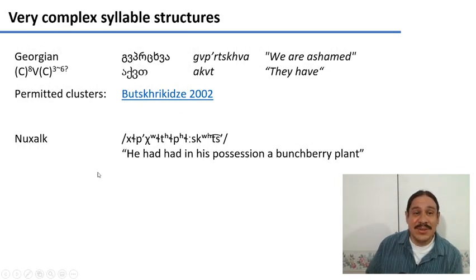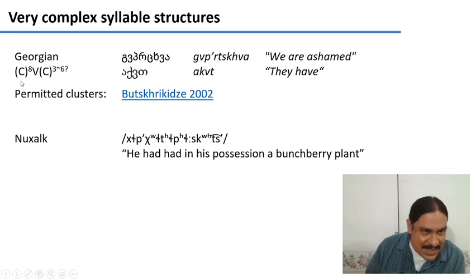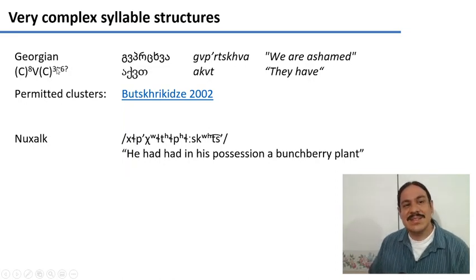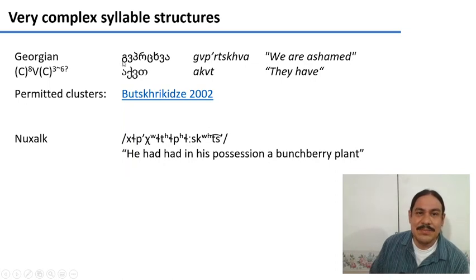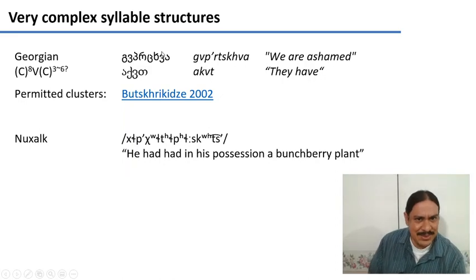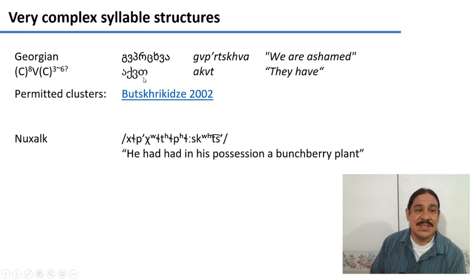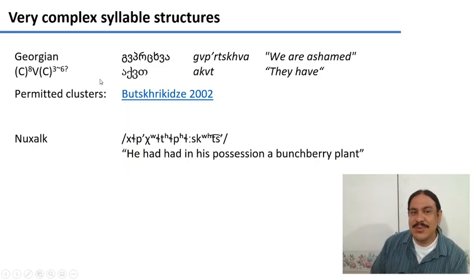And then there are some languages that are really out there. Georgian, for example, allows up to eight consonants in the onset. I found an example with three consonants in the coda, but supposedly it allows up to six. As for onsets, you have prutskva, meaning 'we are ashamed,' which is described as one syllable. And a word like akvt, meaning 'they have,' has three consonants in its coda. For more information about the many restrictions for these combinations, you can read this PhD dissertation here.